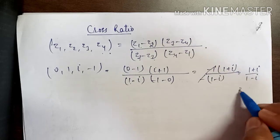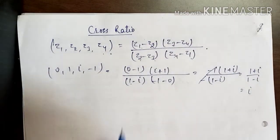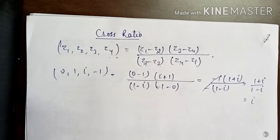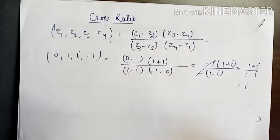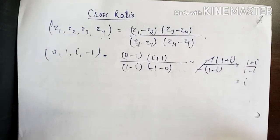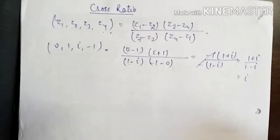This is cross ratio that remains invariant under Möbius transformation.